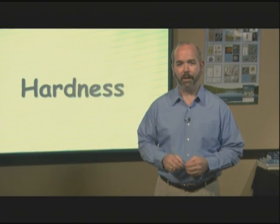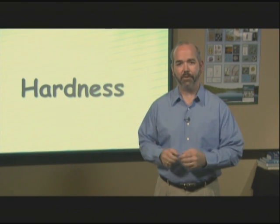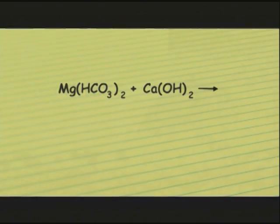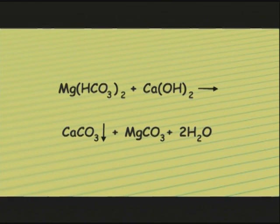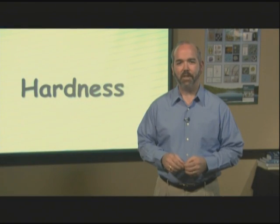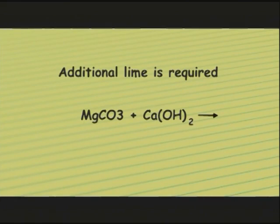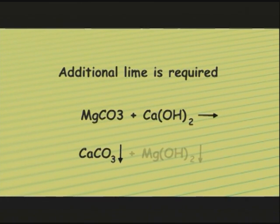To remove magnesium bicarbonate, it takes two separate reactions and twice the lime needed to remove calcium bicarbonate. In this formula, lime reacts with magnesium bicarbonate to form calcium carbonate, which precipitates, and magnesium carbonate, which does not. Since magnesium carbonate is also a form of carbonate hardness, additional lime is required to react with it, forming calcium carbonate and magnesium hydroxide — both relatively insoluble materials that will settle out.